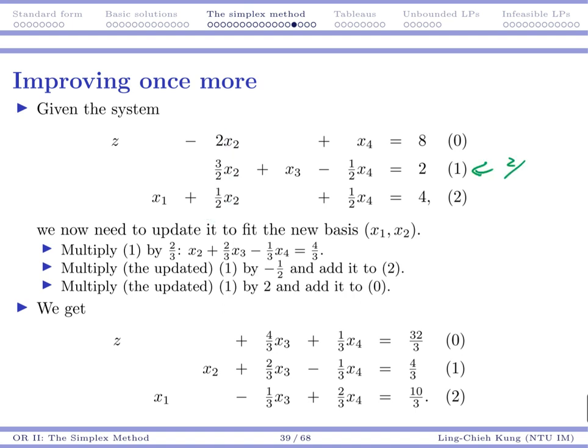So first we would multiply the first row by 2 over 3. Once we do that, we get a new constraint where the coefficient for X2 would be 1.